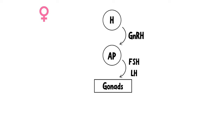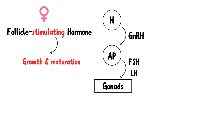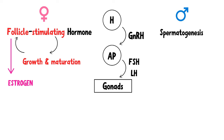In females, FSH or follicle-stimulating hormone acts on the ovaries and stimulates the growth and maturation of follicles, which produce estrogen. In males, FSH promotes spermatogenesis, which is the production of sperm in the testis. This leads to the production of inhibin, which inhibits FSH through negative feedback.